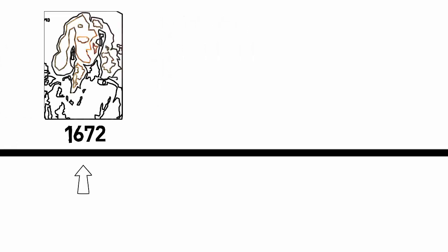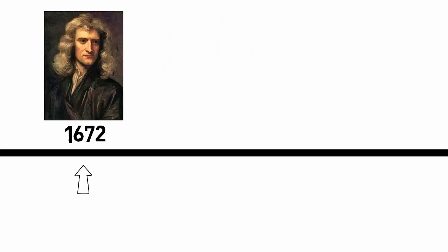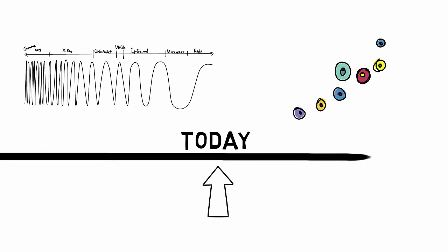Then in the 17th century, Sir Isaac Newton did a couple of experiments and established that lights are particles. And now today we know that light has dual nature, it behaves both as wave and particle.